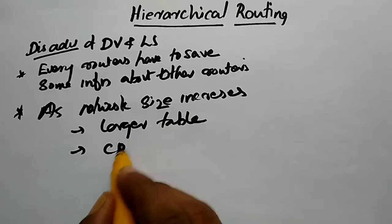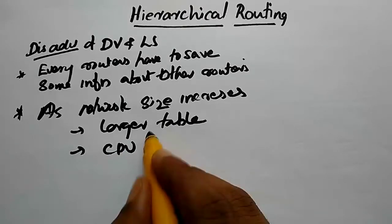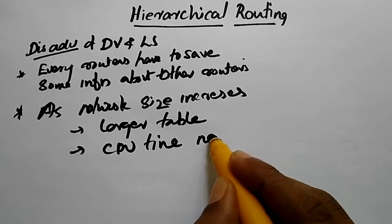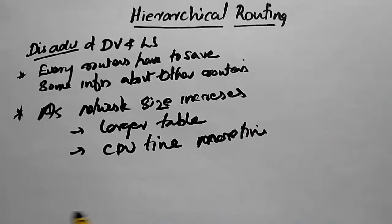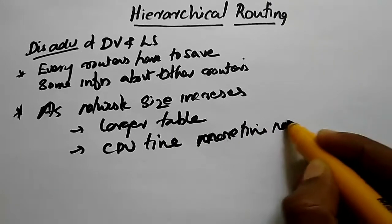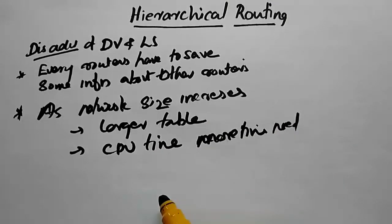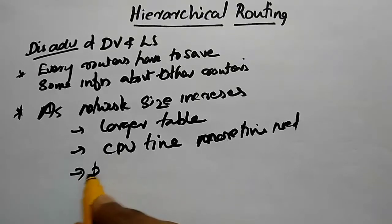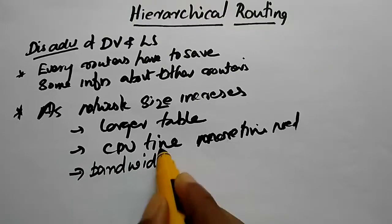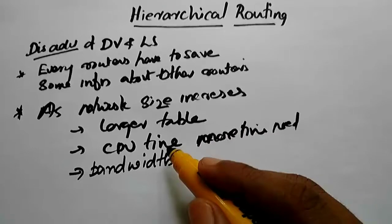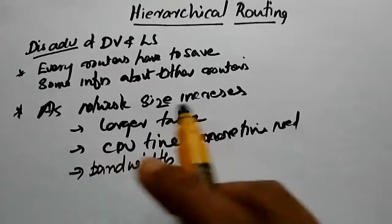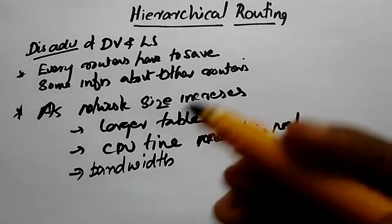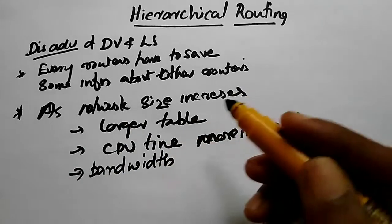So, more CPU time is needed. As tables grow larger with network size, more CPU time and processing resources are required to manage and update these routing tables.